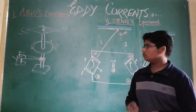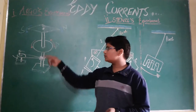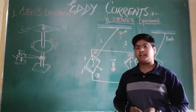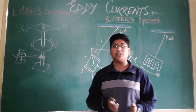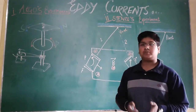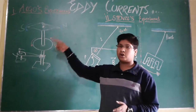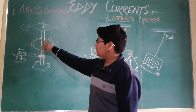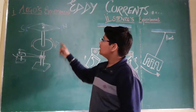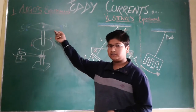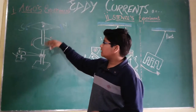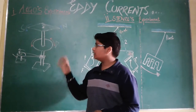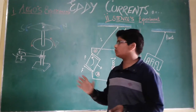Now we want to know the reason behind this. This whole experiment can be explained by Lenz's law. Lenz's law states that the direction of the induced EMF is always such that it opposes the very cause of its production. When this metallic disc is rotated it cuts the magnetic lines of force coming from the magnetic needle. As it cuts the magnetic lines of force, the flux changes, and as a result an eddy current is produced in this metallic disc.